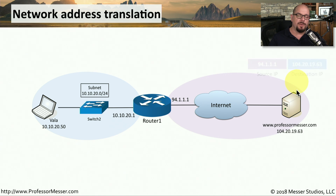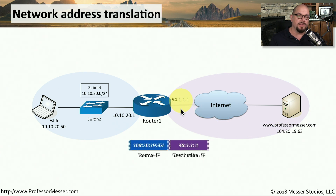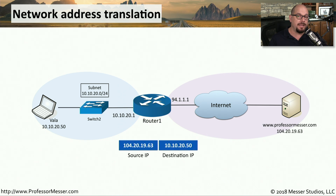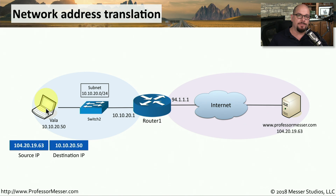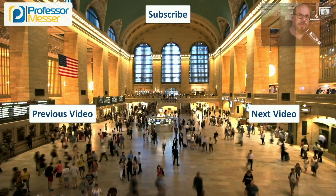When my web server wants to respond back, it simply reverses those IP addresses — the source IP is my web server and the destination IP is the public IP address on the internet. When it's received by that router, the router translates it again back to Vala's internal IP address and sends that information down to her laptop. This network address translation happens for all of the devices on your internal network, so you could have hundreds or even thousands of devices all being translated to one single IP address on the internet.